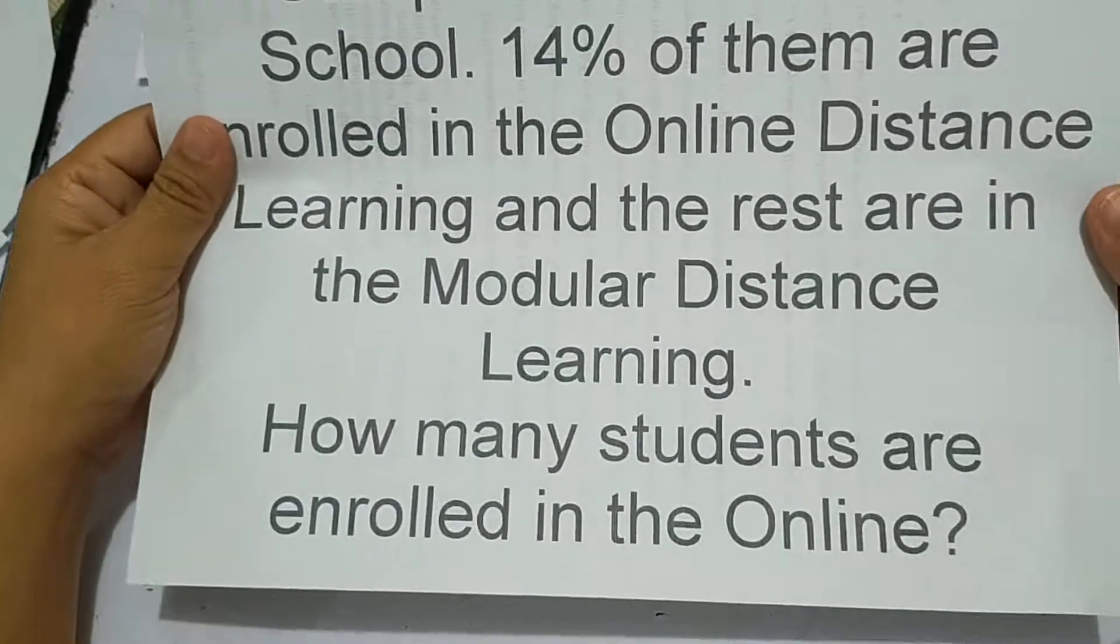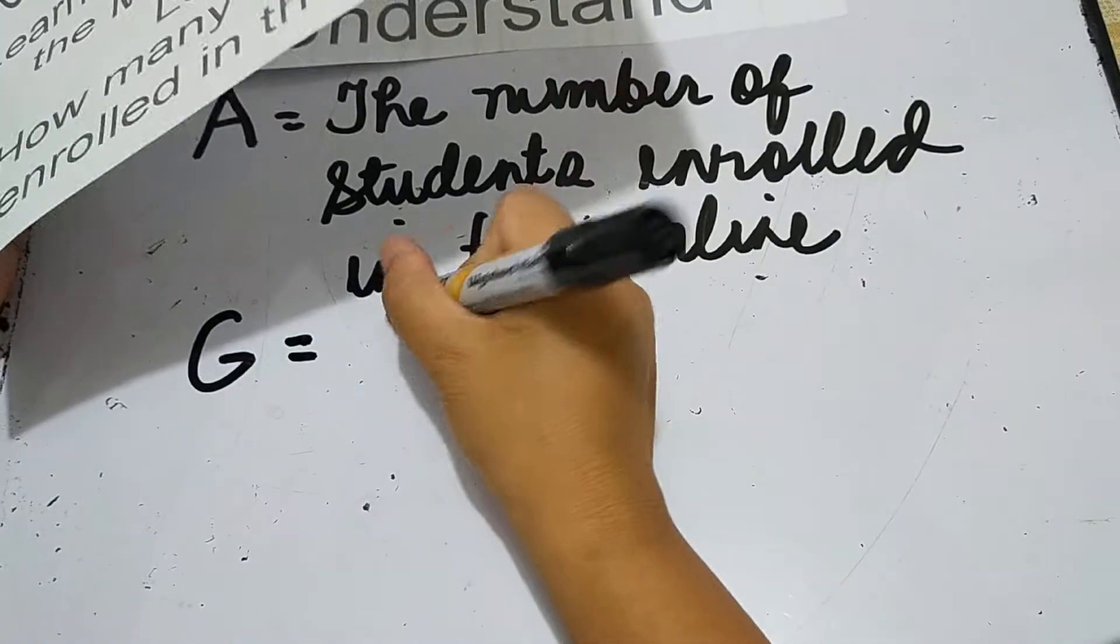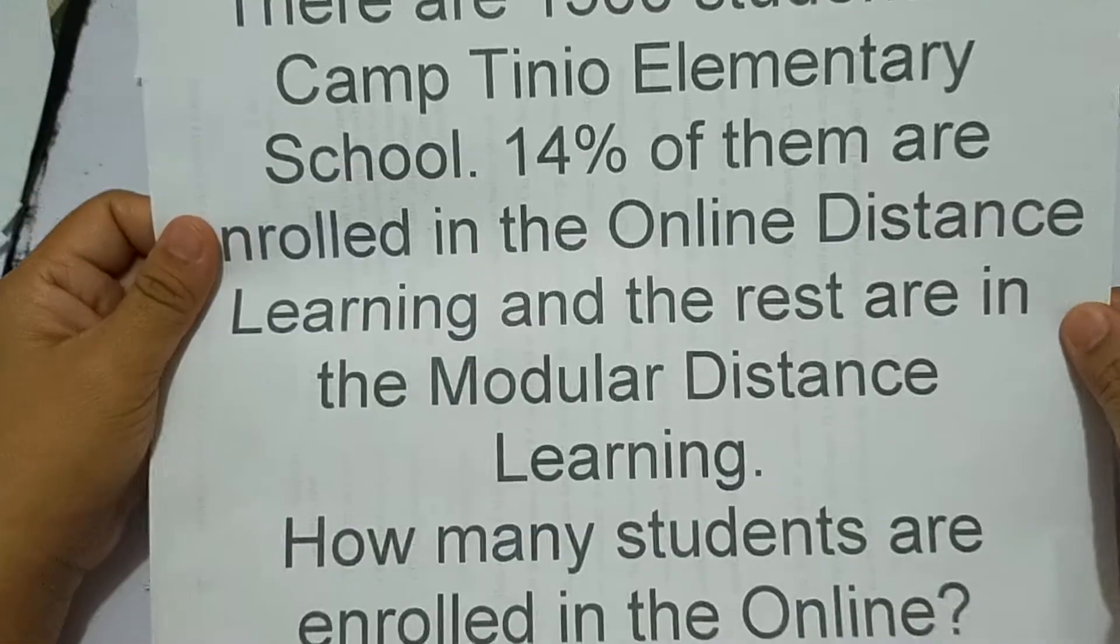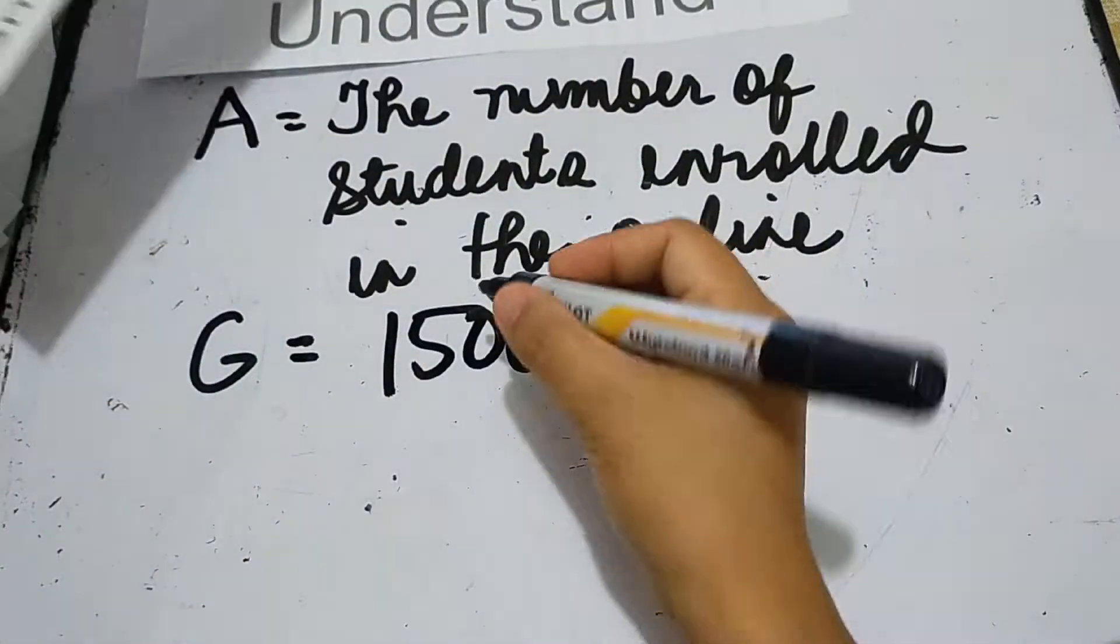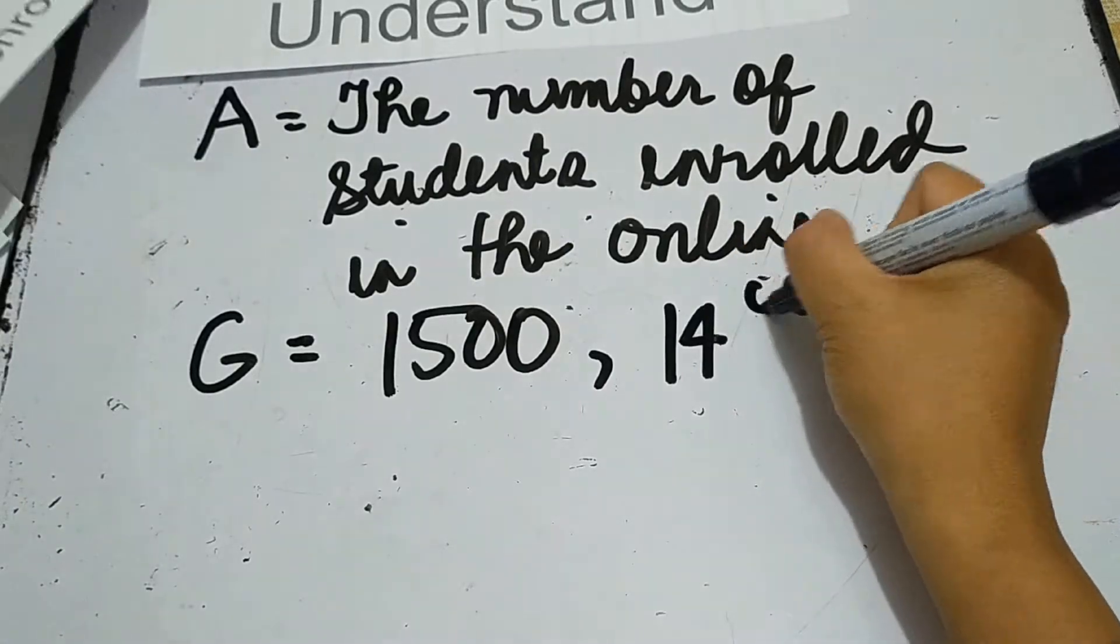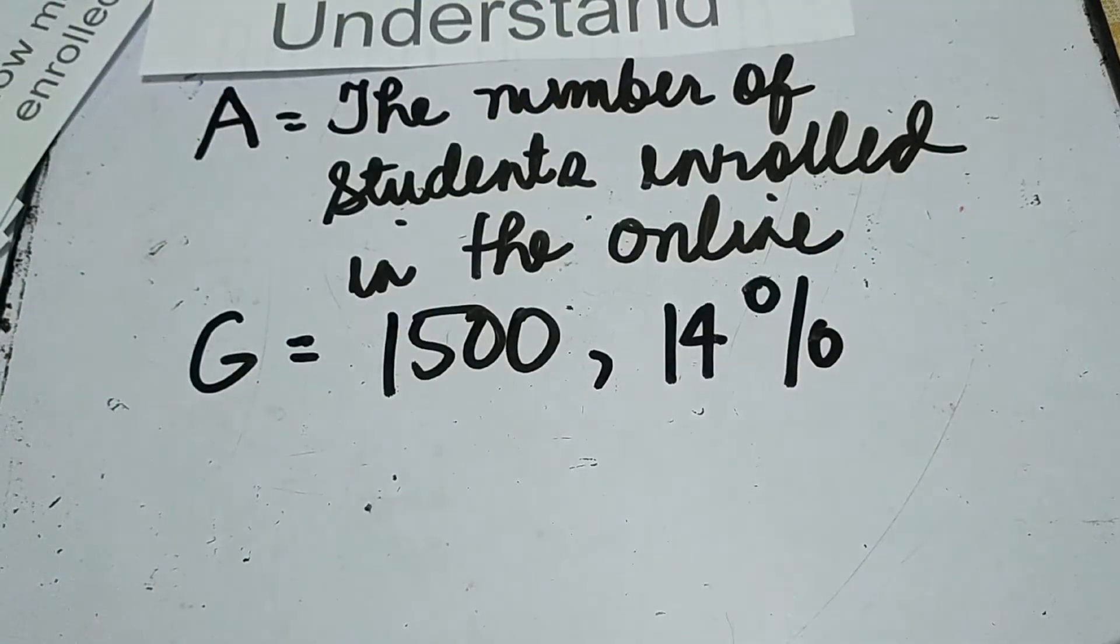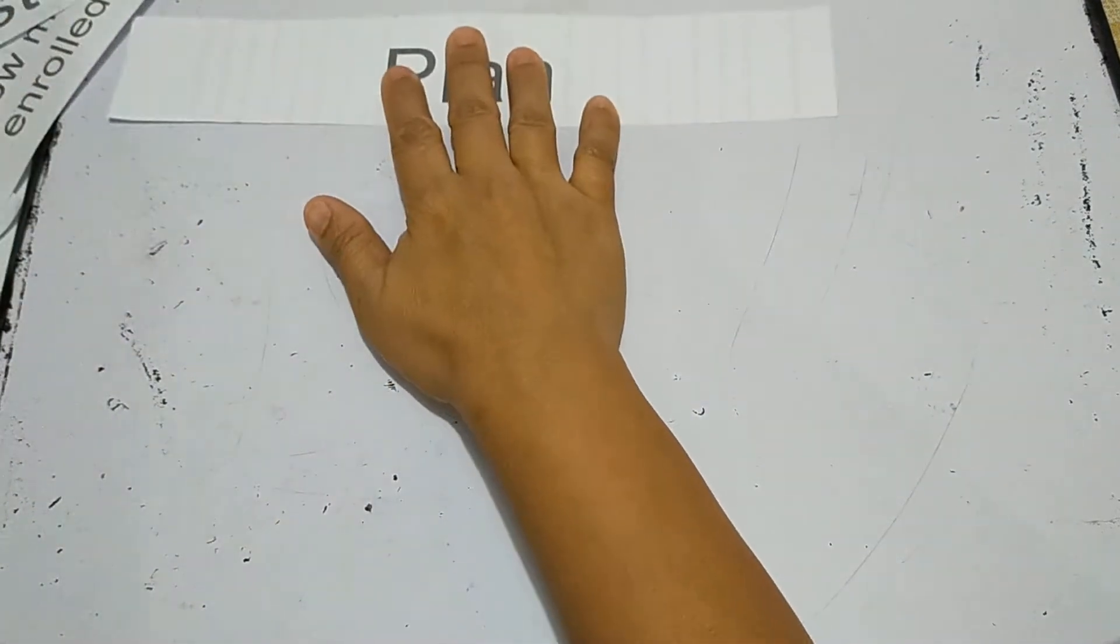1,500 students and 14%. In order to solve this, we're going to use the 4-step plan. The first step is understand.